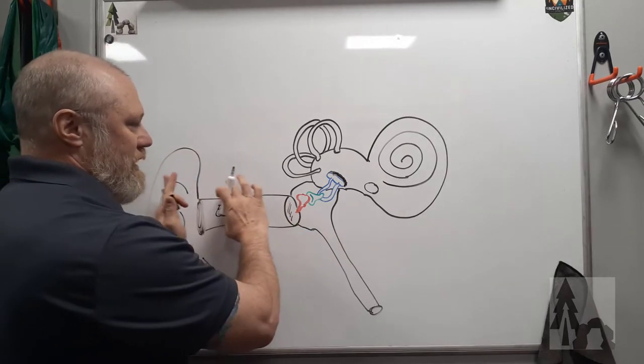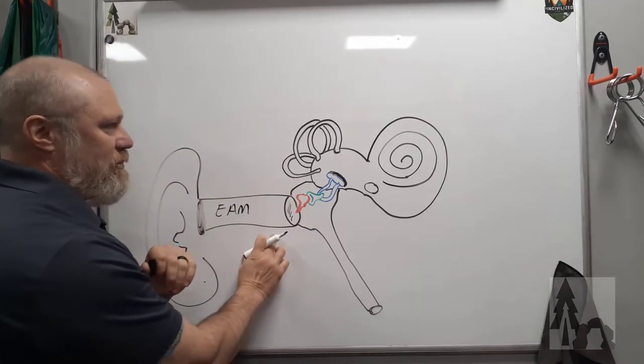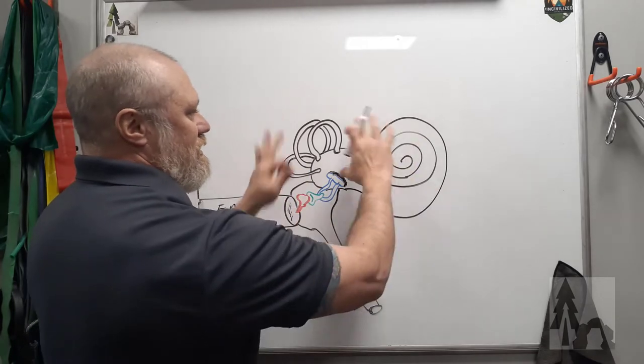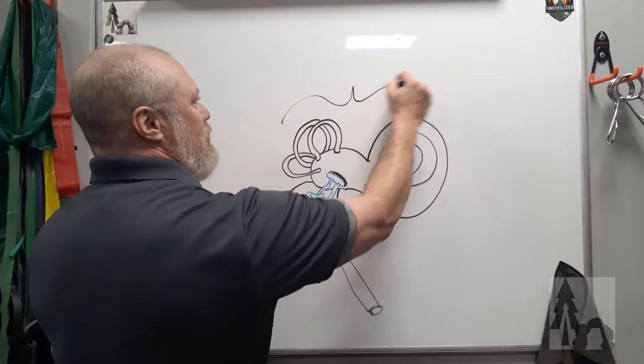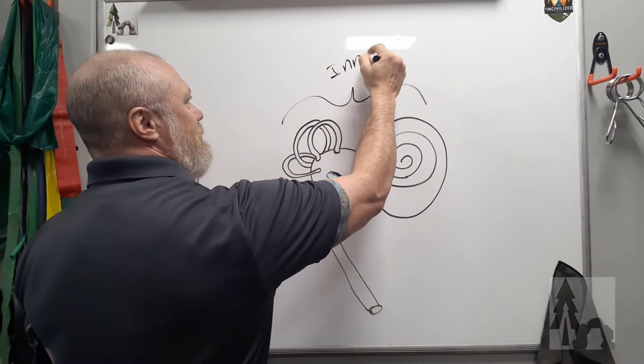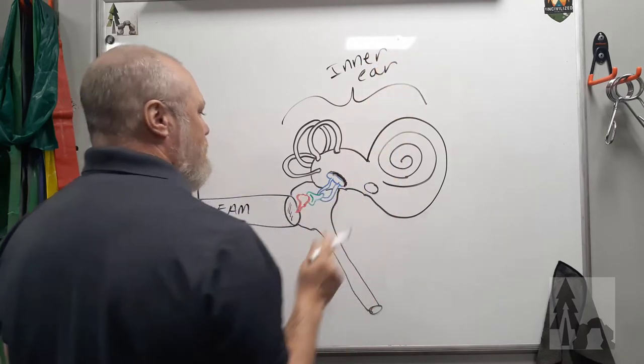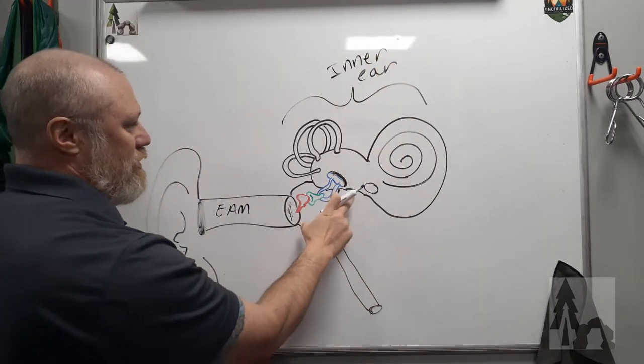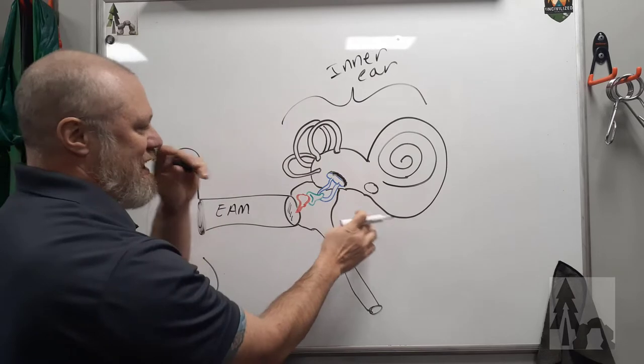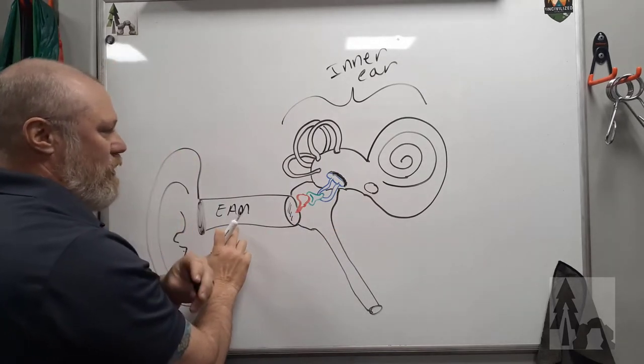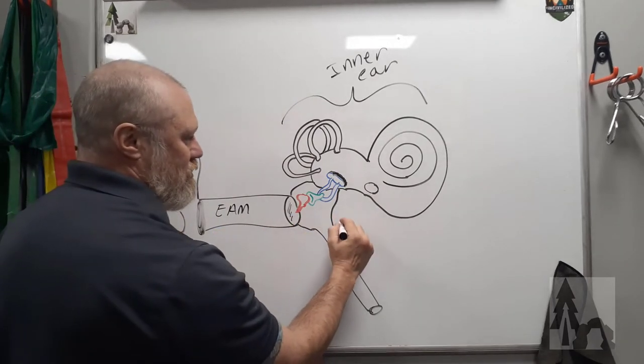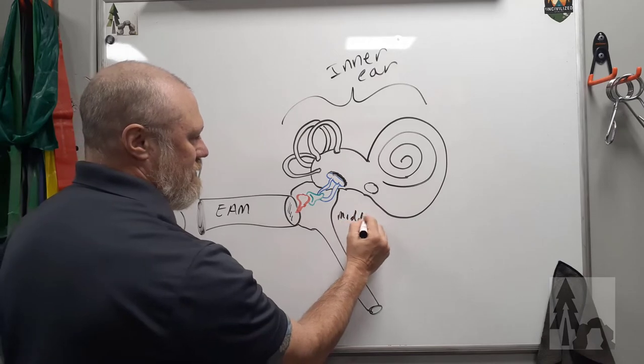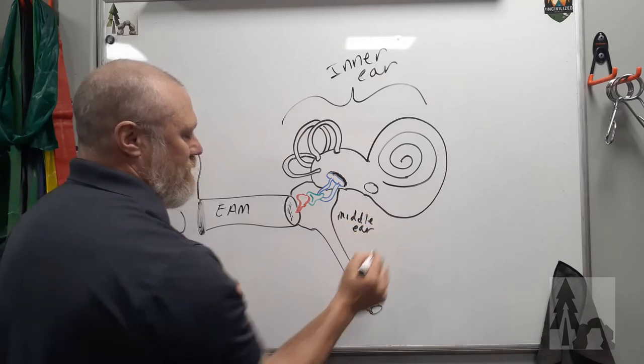Then you're going to get, you go into your skull through the temporal bone, you're in the bone. Then there's this structure, the so-called inner ear. And then this, there's a middle portion between the inner ear, which is fully encased in the bone, and that external auditory meatus that's referred to as the middle ear.